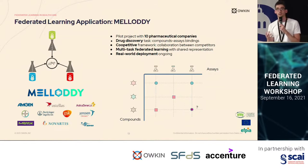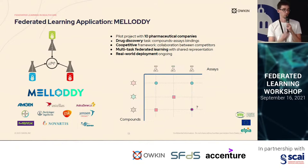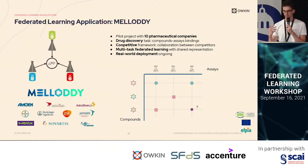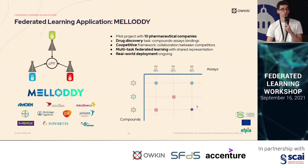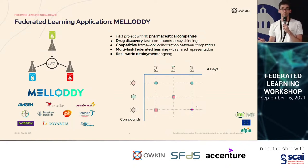However, we are really here in what we call the coopetitive framework — collaborating among competitors. In particular, no pharmaceutical company wants other companies to know which chemicals it has worked on, because this represents sensitive information about where its next drugs are going to be, and it is very important for its business strategy. We are training a machine learning model with a multi-task formulation: there is a shared representation trained in a federated learning fashion, and then there are layers which are refined at each center. Real-world deployment is ongoing, and we may share results in the future.